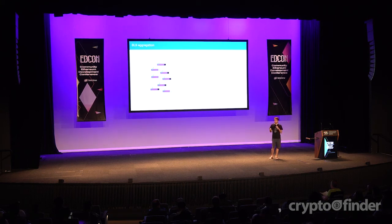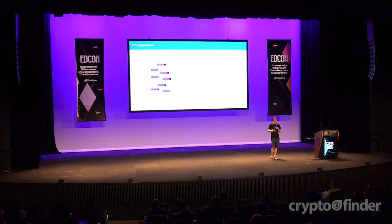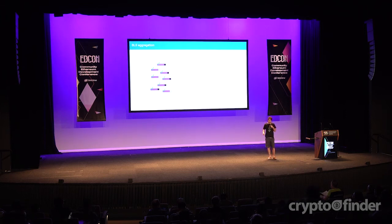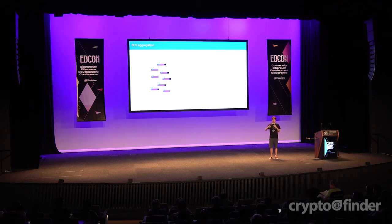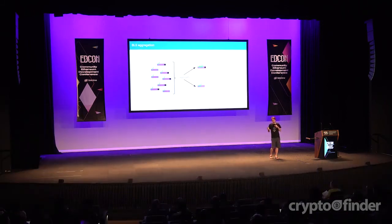A quick note on why one single bit is a very nice property to have: it's related to aggregation. BLS aggregation is a signature aggregation technique that works extremely well when aggregating the same message — the verification cost is like one pairing per message regardless of how many people are signing. But as soon as you have multiple messages, you need multiple pairings. When you only have two types of messages — attestation plus bit zero, attestation plus bit one — you can just aggregate them separately, and your verification cost only doubles, which is still marginal.